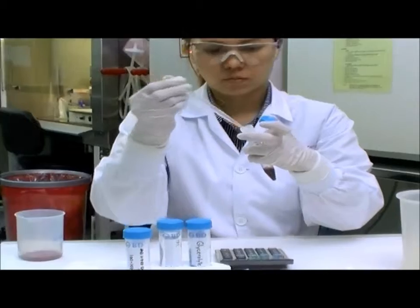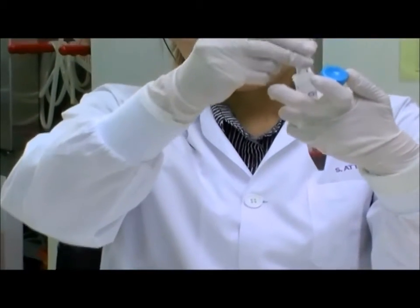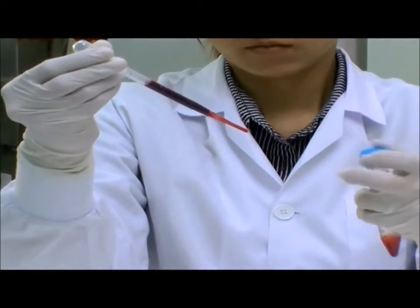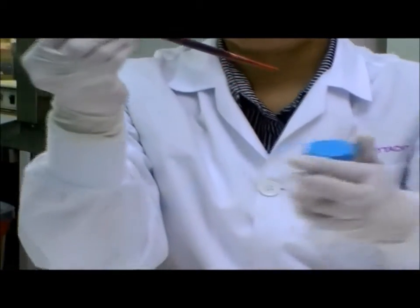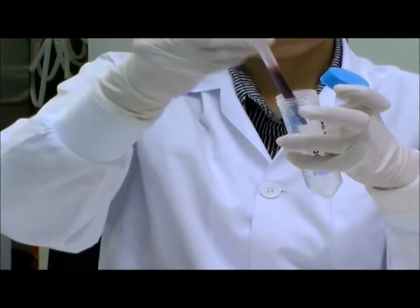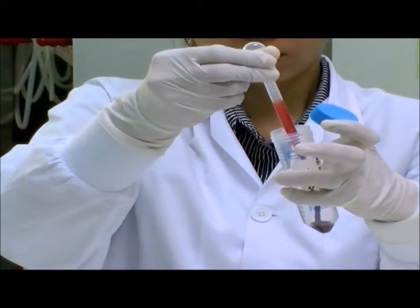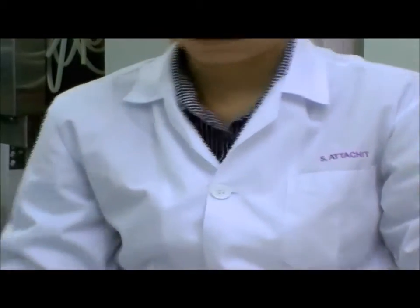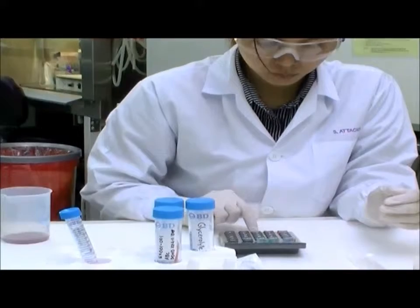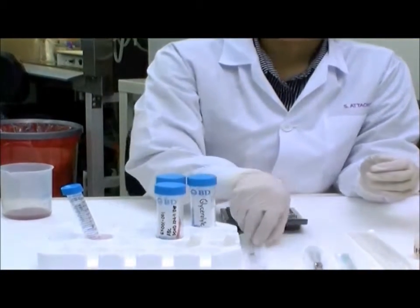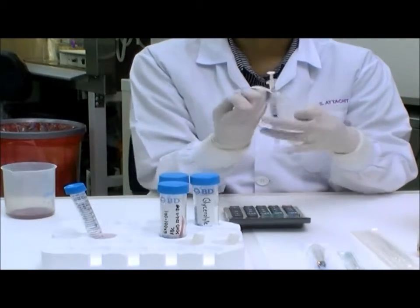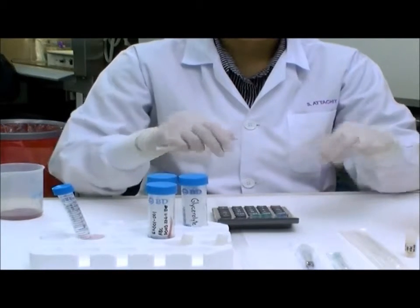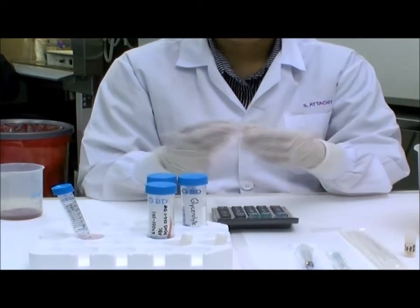Transfer the packed red cells from the 15 ml centrifuge tube to the 50 ml centrifuge tube. While transferring, estimate the volume in milliliters of the packed red cells. Multiply the estimated volume of packed red cells by 0.33. The result is the volume in milliliters of glycerolite which is added initially to the packed red cells. For example, if the volume of the packed red cells is 1.5 ml, you will add 0.5 ml of glycerolite to the cells.